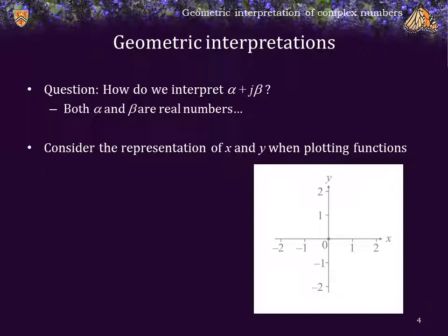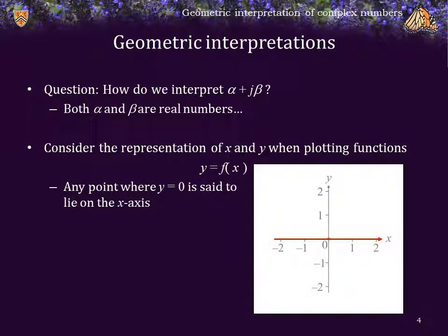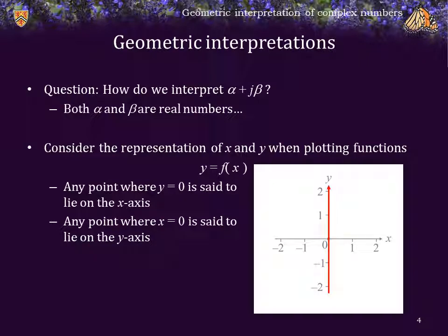Well, let's go back and consider the representation of x and y when we're plotting or graphing functions. So let's say we have a function and we're plotting it. y is a function of x. So for every value of x, the function has a y value, and we can plot all of those points. Now, any point where y is equal to 0 is said to lie on the x-axis, and similarly, any point where x is equal to 0 is said to lie on the y-axis.